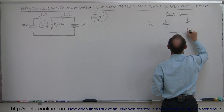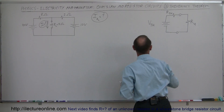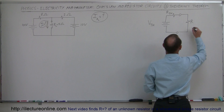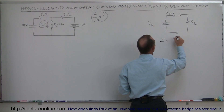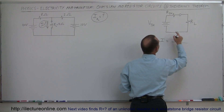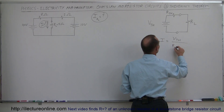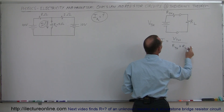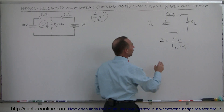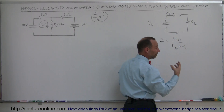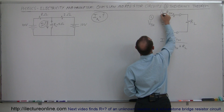It then becomes really easy to figure out the current through the load resistor. All we have to do is find I through the load resistor, which equals the Thevenin voltage divided by the sum of the two resistances. Since they're now in series, that's simply the Thevenin resistance plus the load resistance. So the whole objective is to find the Thevenin voltage and the Thevenin resistance of the equivalent circuit — we need to find both the voltage and the equivalent resistance.